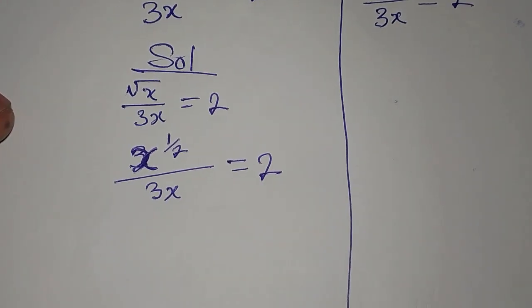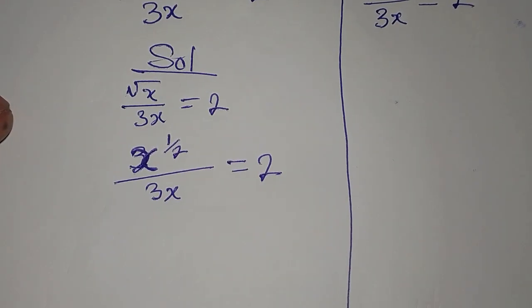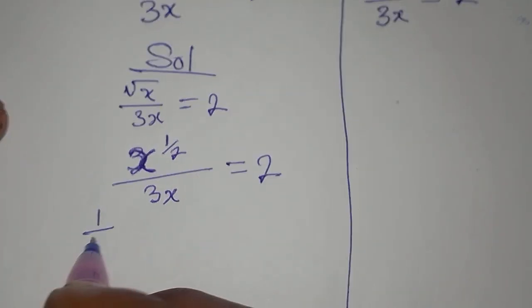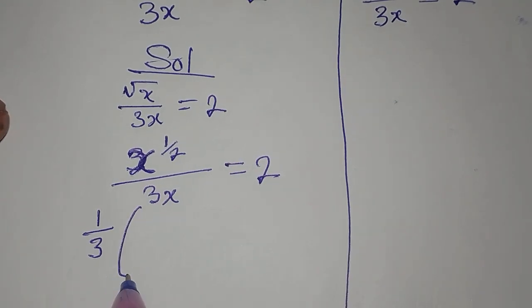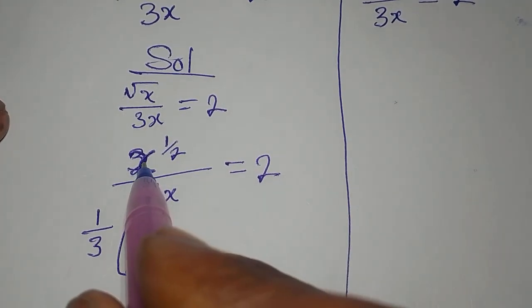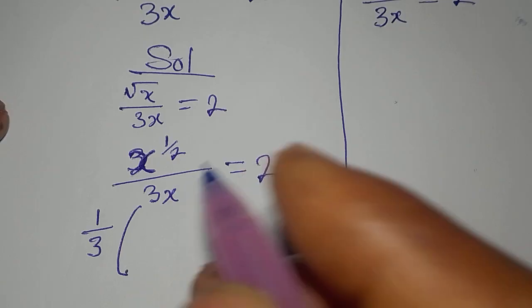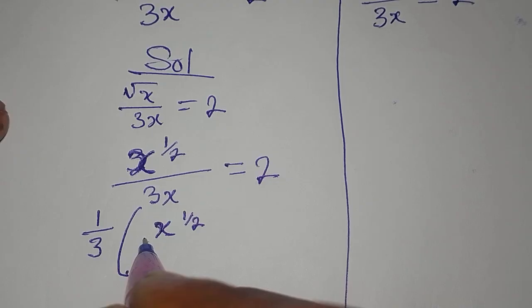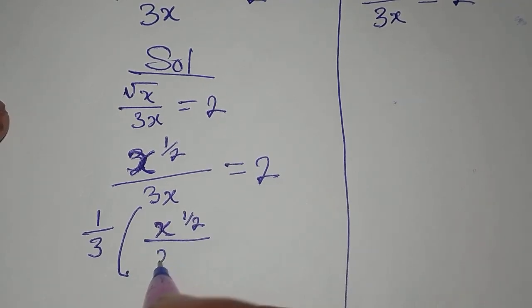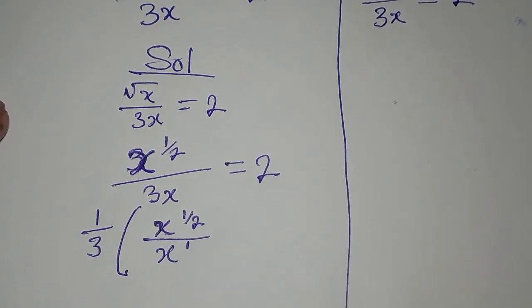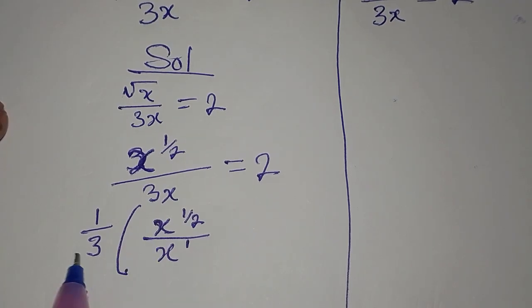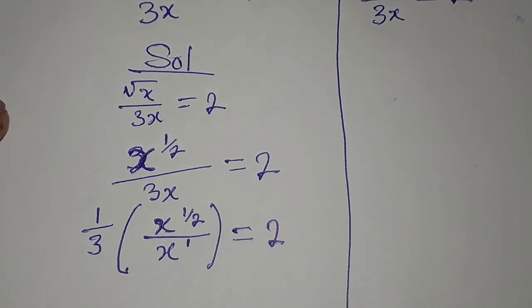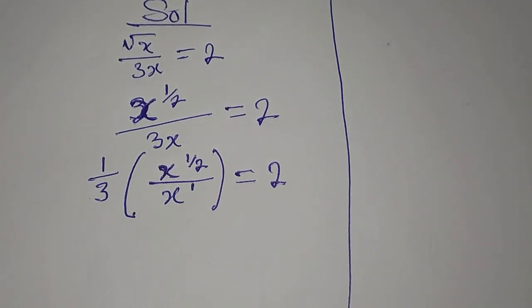To continue with this, I can have this as 1/3 times x to the power of 1/2. Then this is over x, which is the same as x to the power of 1. This 3 is already out. This is equal to 2.